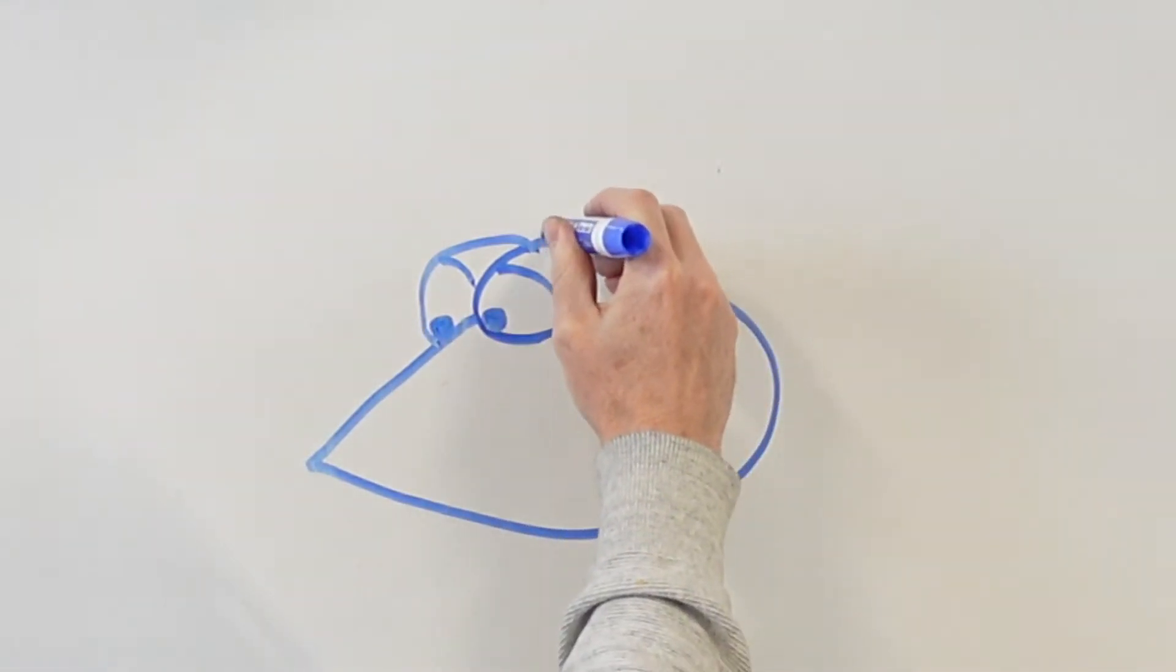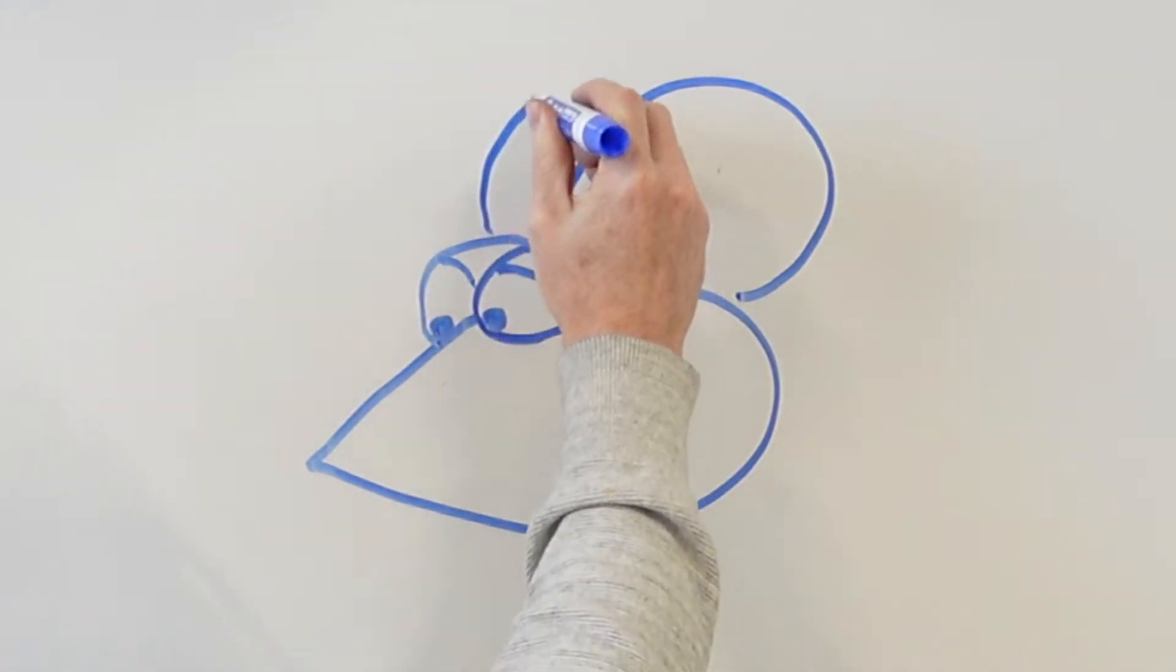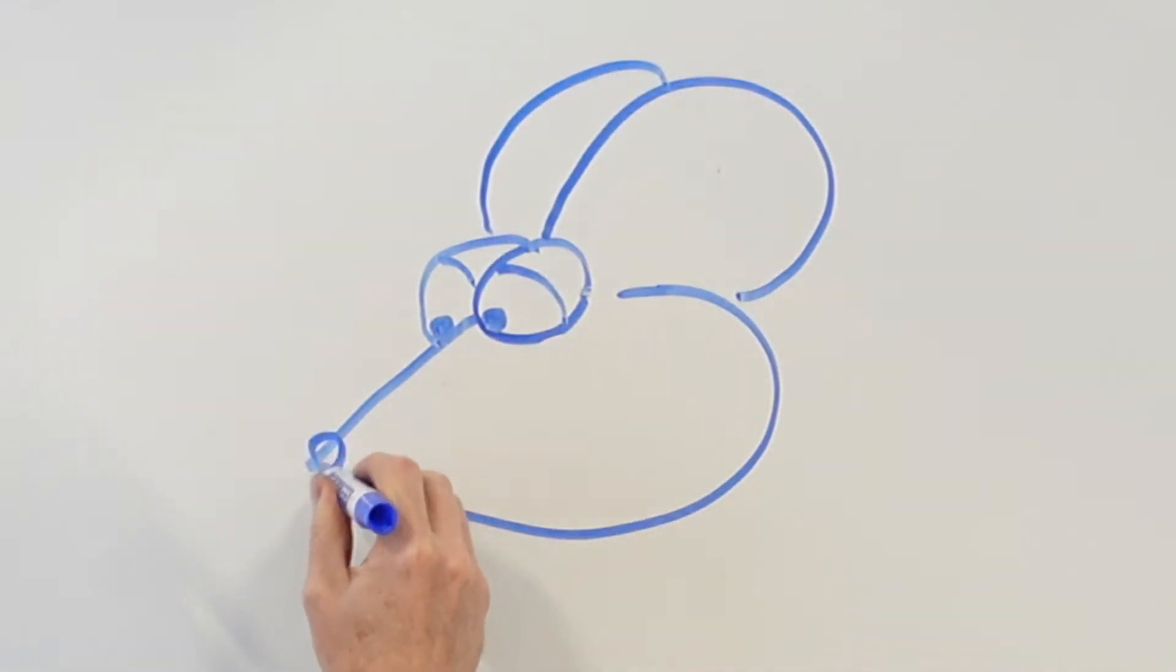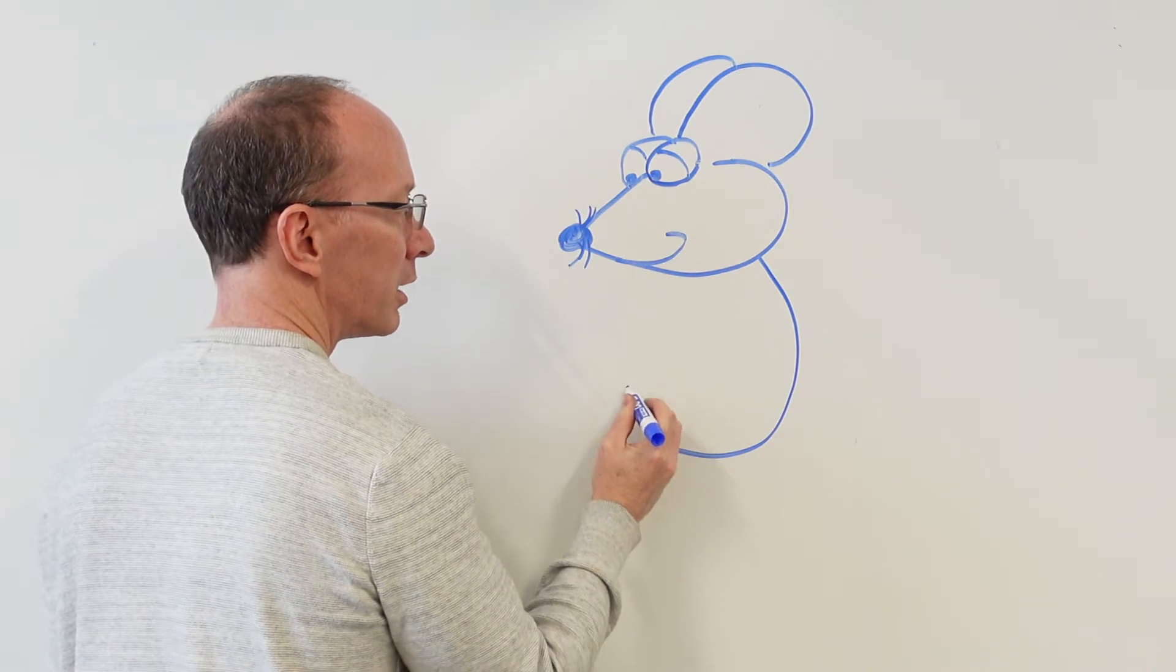Draw my ear right about here. Another ear in the back. Give the nose. If you want to, you could even put in a little smile. And then a nice big belly for this one.